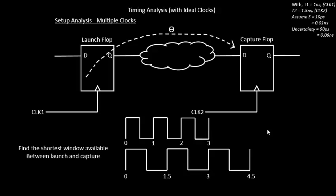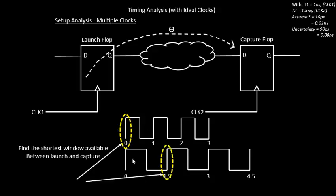Now we find all launch and capture combinations — you launch on one edge of clock one and capture on the next rising edge of clock two. The first combination: launch at 0 nanoseconds, and the next rising edge on clock two after 0 is at 1.5 nanoseconds. So the window available for the combinational logic is 1.5 nanoseconds, meaning theta must be less than 1.5 nanoseconds. This is the first scenario.